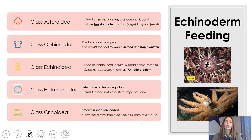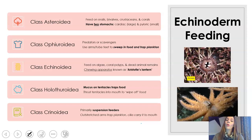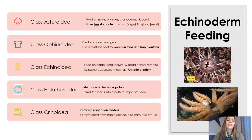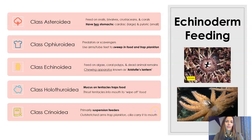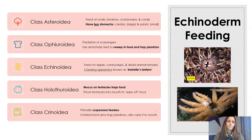Now that we've learned about the five major classes, let's talk about their feeding, which differs a bit by class. Class Asteroidea — the ones we'll probably spend the most time on — have two stomachs: the cardiac stomach, which they can eject, and the pyloric stomach, which is inside and receives that broken down matter.